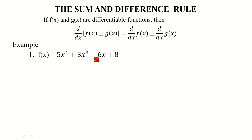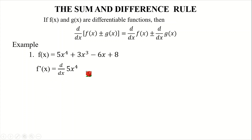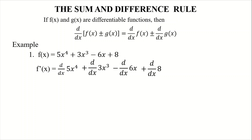...plus 3x³ minus 6x plus 8. So again, with the sum and difference rule, we will get the derivative of each term. We'll get the derivative of 5x⁴, then add the derivative of 3x³, then subtract the derivative of 6x, and add the derivative of our constant. Remember the constant multiple rule — if you don't know it yet, there's another video about it and I'll put the link below.